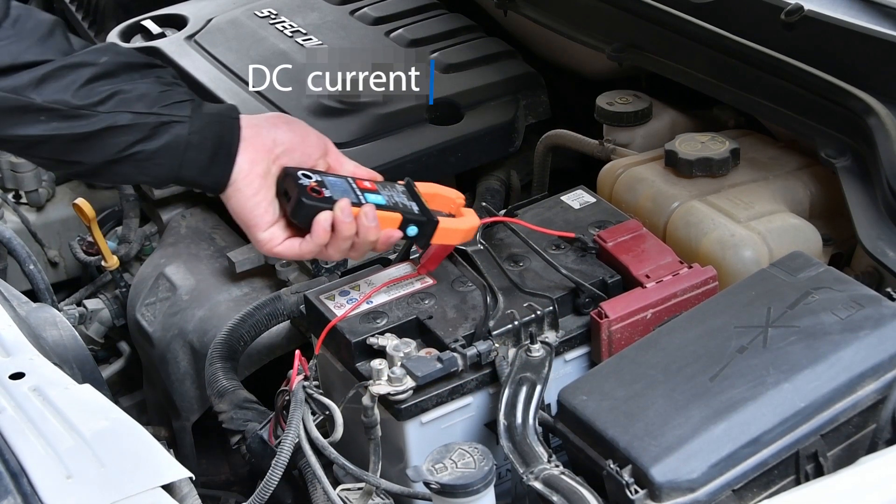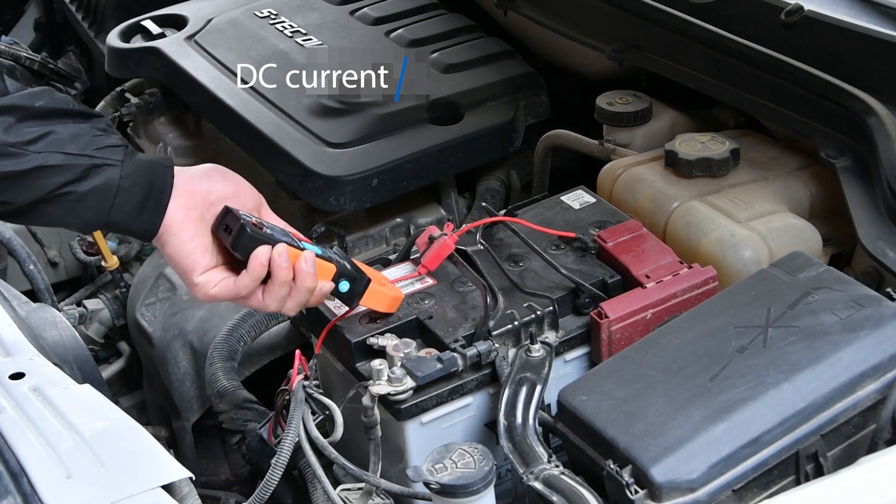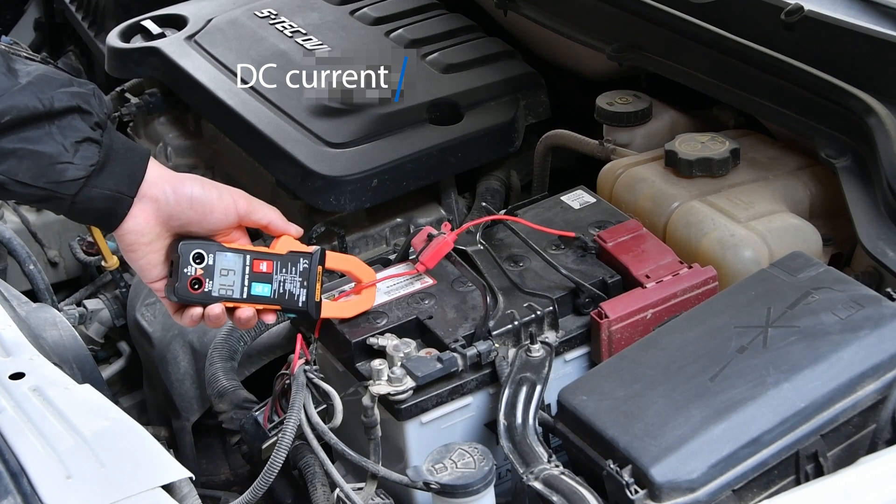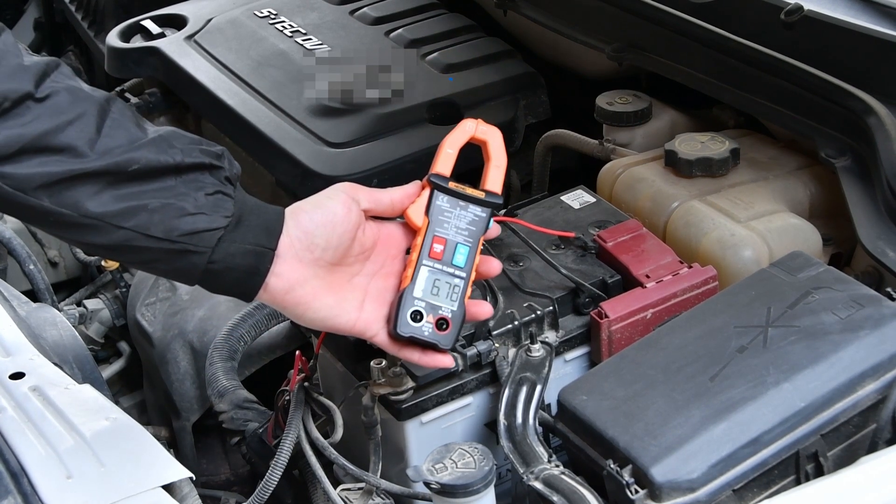600A high current clamp meter can directly measure the DC current of the car. Data rotation can keep the current value for recording.